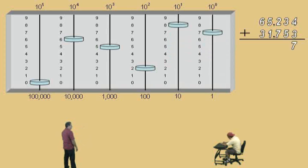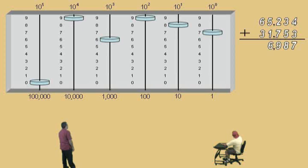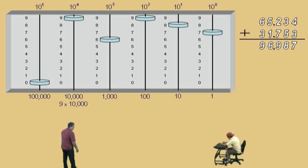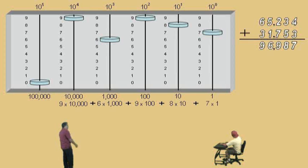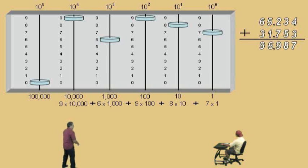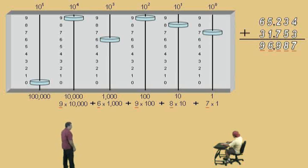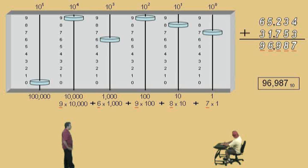Here we go. Four and three is seven. Three and five, eight. Two and seven, nine. Five and one, six. Six and three, nine. Now look at our numbers here. Notice we have nine of these ten thousands, six of these one thousands, nine of these one hundreds, eight of these tens, and seven of these ones. Remember, your first column in any base is always the ones column because anything to the zero power is one, except for zero to the zero. So notice our base ten number — we have a nine, a six, a nine, an eight, and a seven. And if you multiply and add all these numbers up, you get 96,987 base ten. It's kind of like the expanded form that we talked about in pre-algebra.